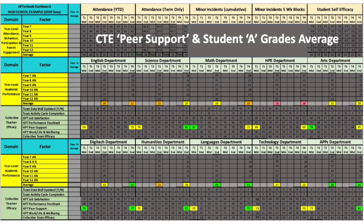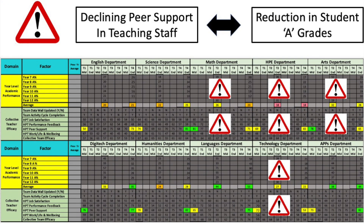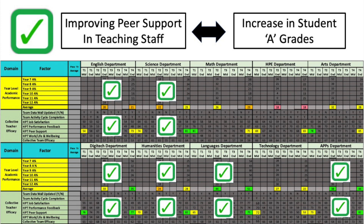Drilling even further, here it gets interesting. What you can see is the pre-post improvement or otherwise in peer support and the increase or decrease in student A grades. Wherever you have declining peer support in those faculties, you see a corresponding reduction in student A grades. And conversely, where peer support grows over the 12 months within those faculties and teachers, you see a corresponding increase in student A grades.